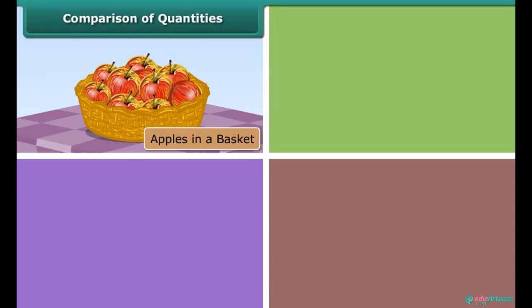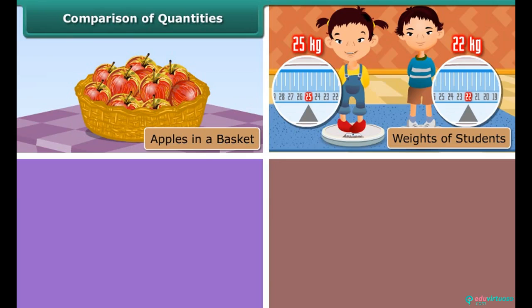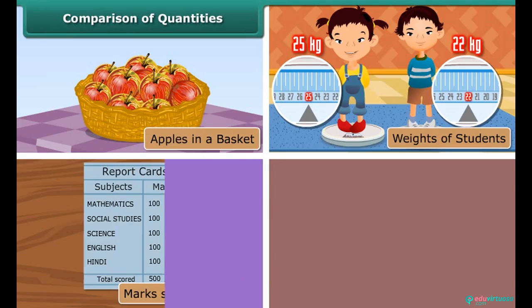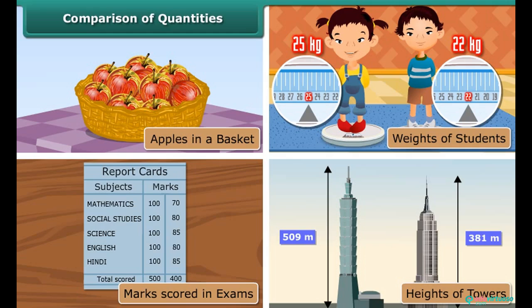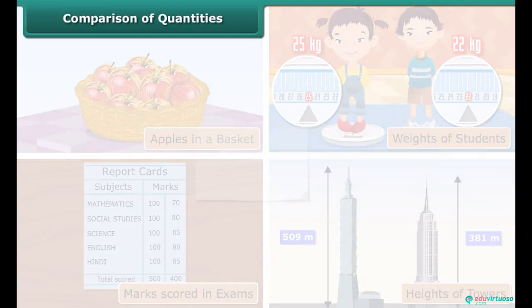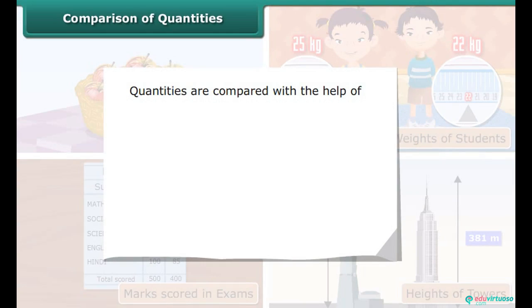Apples in a basket, weights of students, marks scored in exams, heights of towers — these are all examples of quantities. Quantities are compared with the help of ratio, proportion, and unitary method. Let us look at these methods of comparison one by one.